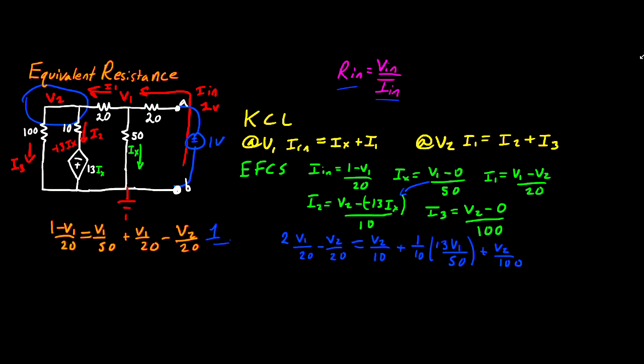So I'm going to take equation 1 and rearrange it to solve for V2. To make this a little bit easier, I'm going to multiply everything by 100. That way I can get rid of these fractions. That's going to give me 5 minus 5V1 is equal to 2V1 plus 5V1 minus 5V2. So now we can move V1 over to one side and get rid of those negatives, and we'll be left with 5V2 is equal to 12V1 minus 5. And this gives us that V2 is equal to 12V1 minus 5 divided by 5.